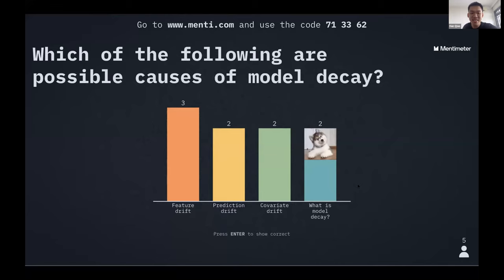Now the second question, which one of the following are possible causes of model decay or degradations of model performance? We have feature drift, which is about the changes in the input distribution of your model. And we also have prediction drift, which changes in the output distribution of the model. And we also have covariate drift. So covariate drift is changes in the relationship between the features or between the inputs to our model.